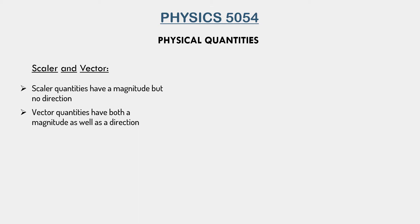We have to ask ourselves: what exactly is a magnitude? Magnitude refers to the actual value of whatever quantity we are measuring. For example, if I say that an object has a width of 5 meters, 5 meters is the magnitude because it is the value of the length.